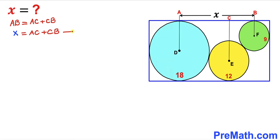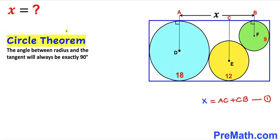Let's call this equation number one, and recall the circle theorem: the angle between the radius and the tangent line is always equal to 90 degrees. In our case, this blue line is the tangent and these are our radii, so these angles are each 90 degrees. Since all these lines are parallel to each other, this angle is 90 degrees as well.